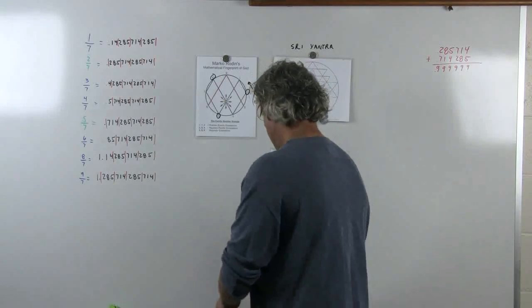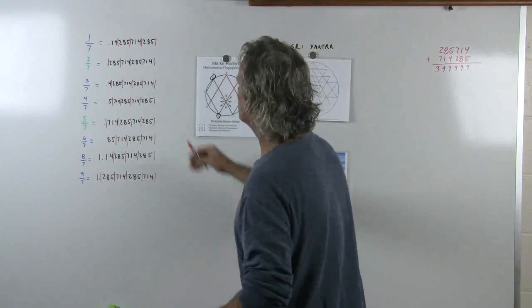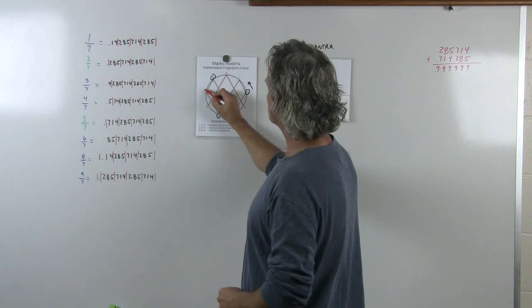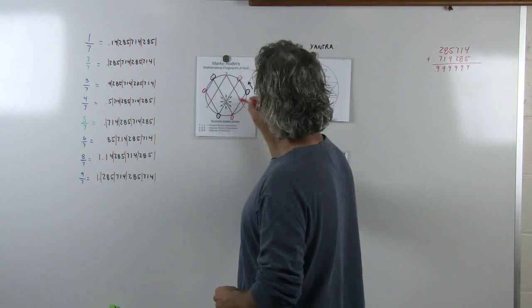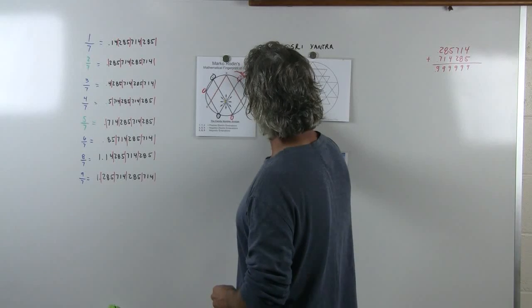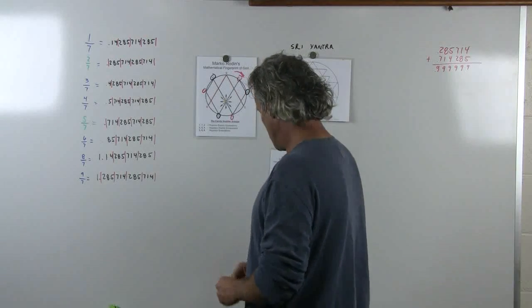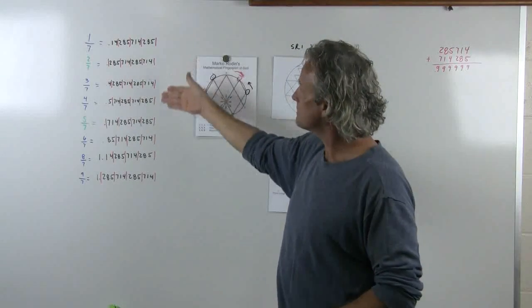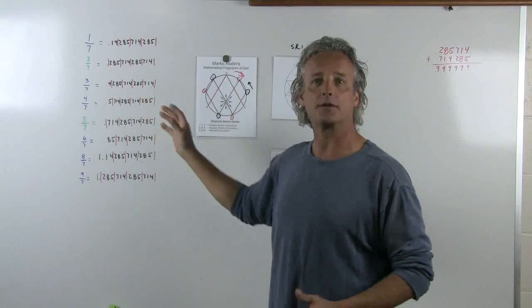So that, the 2, 8, and 5 goes that way, counter rotates. Now if we look at the 7, 1, and the 4 family number groups, we have 7, 1, and 4. It goes this way. So you can see how discovering the family number groups using this method, you can see how they're supposed to, how the number sequence works.